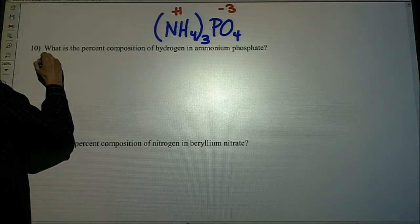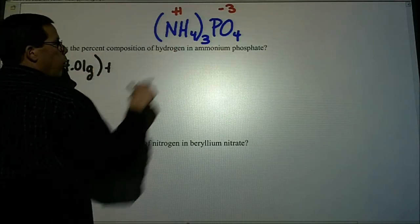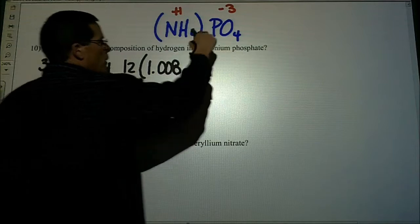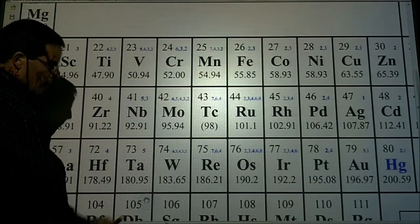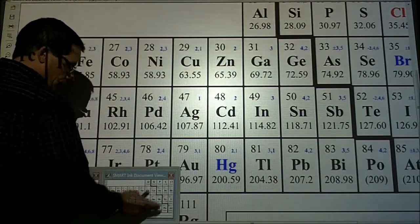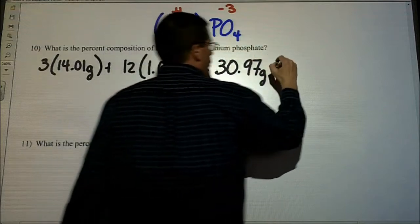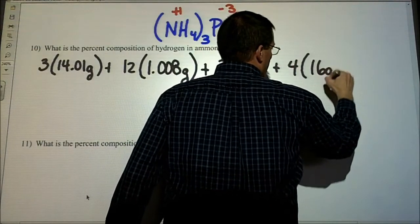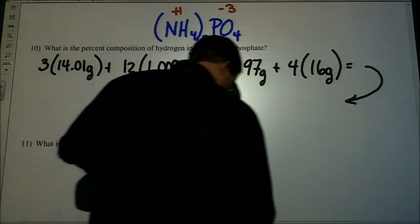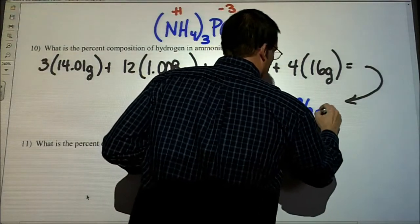I'm going to do that with, we have three nitrogens, 14.01, plus I have 12 hydrogen (4 times 3), plus I have a phosphorus, which is 30.97, plus we have our four oxygens. The molar mass of that whole thing, let's find out what that is, 149.096 grams per mole.